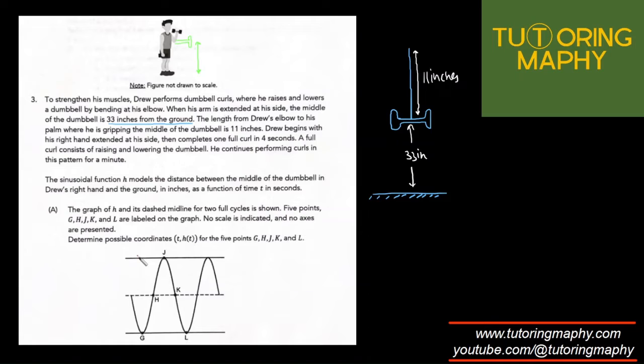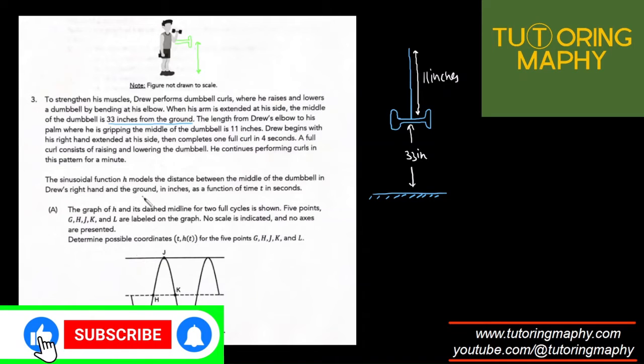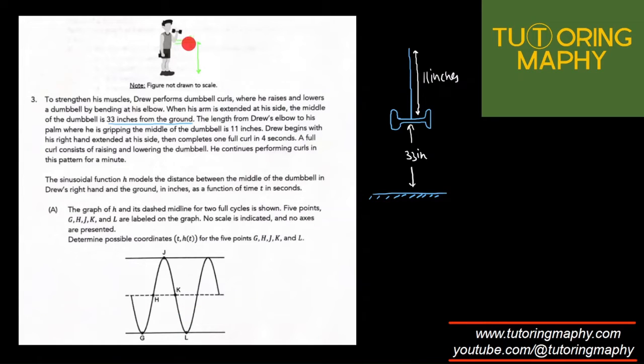When the dumbbell is at this middle position, that's the midline. When he's at relaxed position, this is the minimum. When he's in the completely lifted position, the dumbbell is at its maximum.